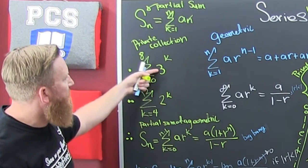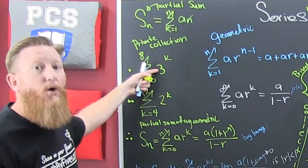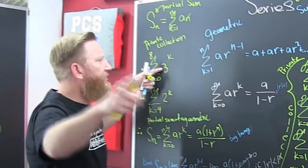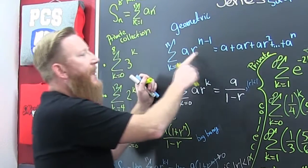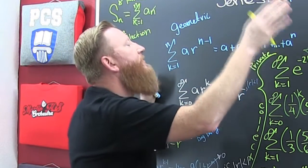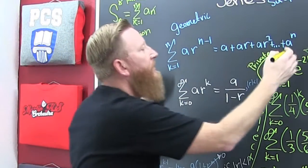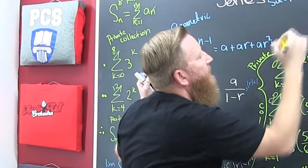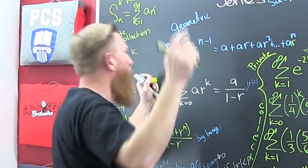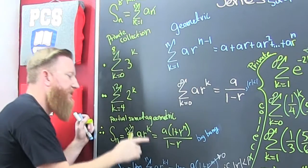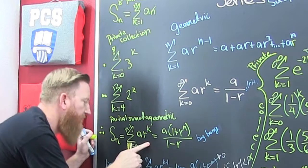Both of these are geometric. What are geometric? Geometric is when it's of this form — repeated multiplication from term to term. There should be an r to the n right there. Those are all going to add up to this.